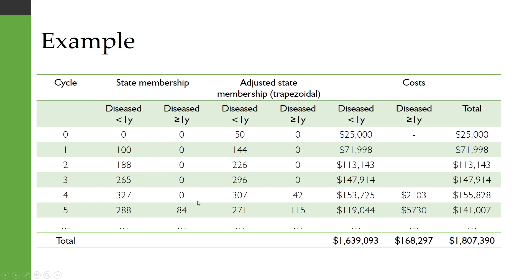Okay so in the first cycle nobody is in the diseased state at all because everybody starts in the healthy state and then you start to see over time people are entering this diseased state and eventually reaching the long-term disease state.